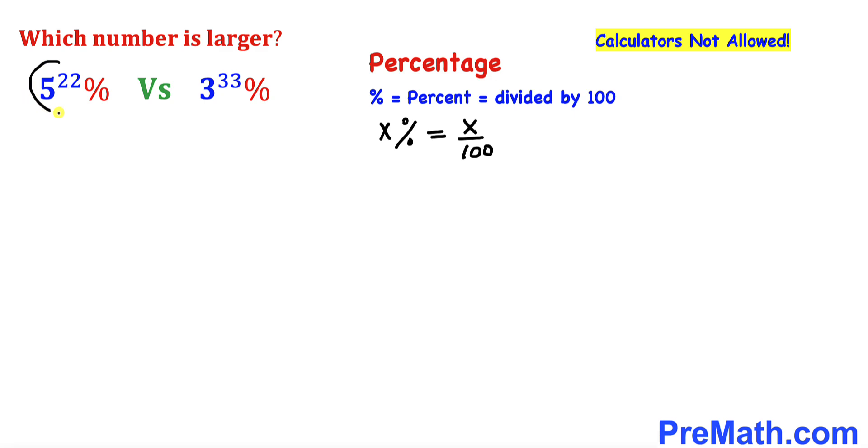Therefore, our left-hand side number could be written as 5 to the power of 22 divided by 100. Likewise, the right-hand side number could be written as 3 to the power of 33 divided by 100.